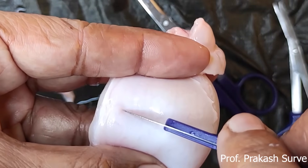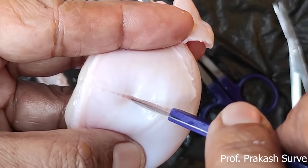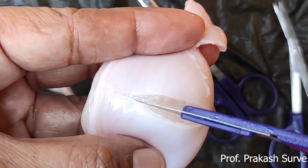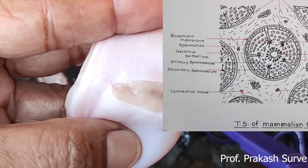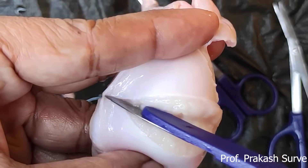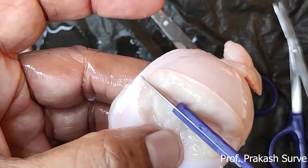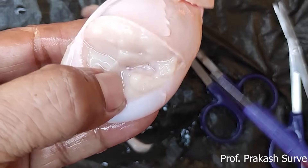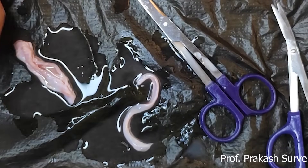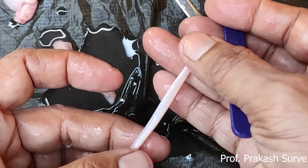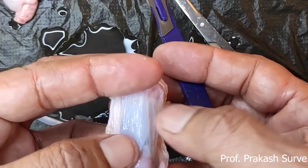We will take the transverse section and try to check how it looks. This tunica vasculosa — first we will cut that, then we can get the inner structure about the testes. It is very difficult to understand how the seminiferous tubules are arranged here, because the color is a little bit transparent, which is why it's difficult to observe. What I am holding is the vas deferens. This is about the tunica albuginea, which is a collagenous connective tissue layer.